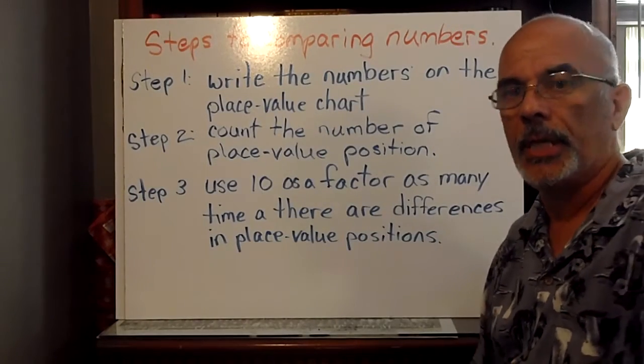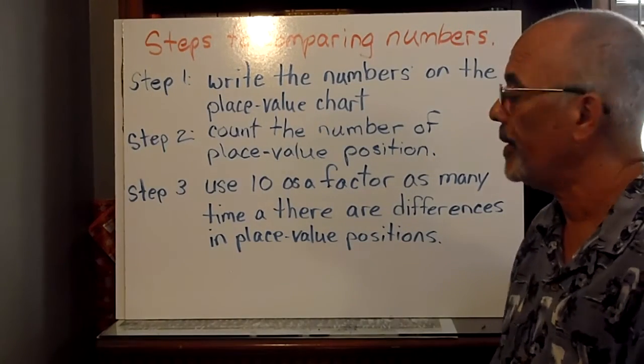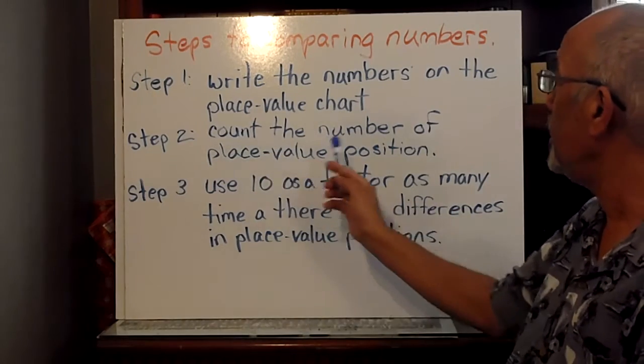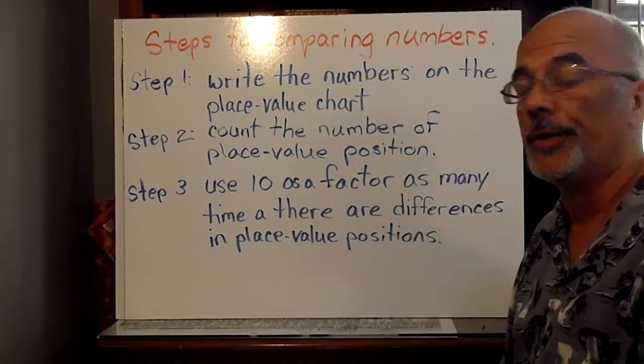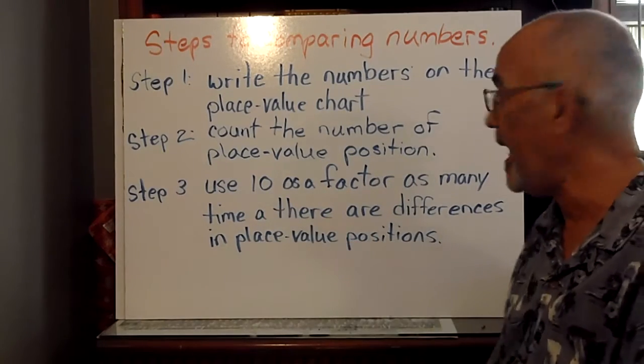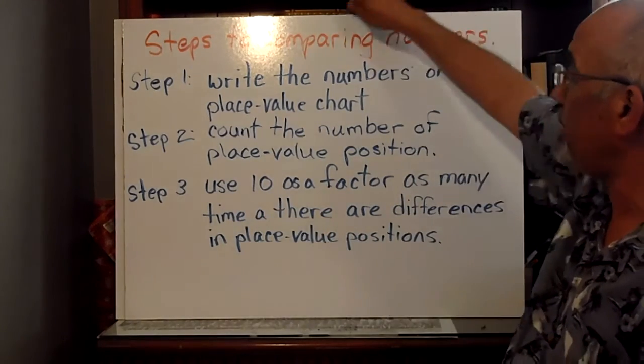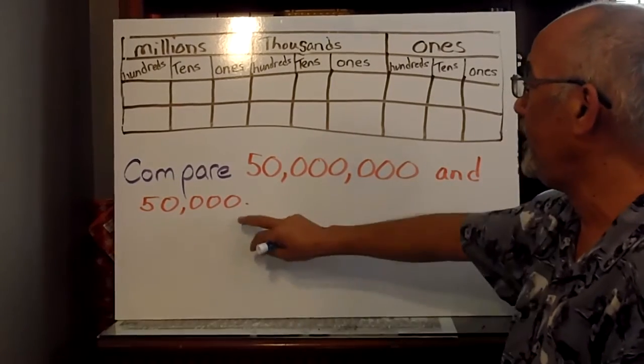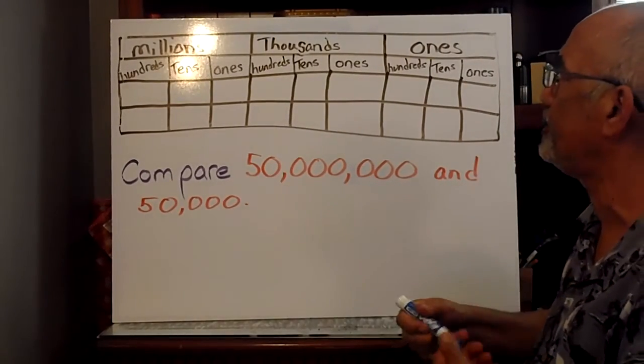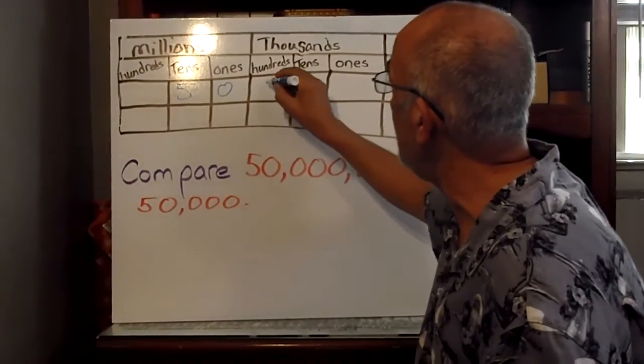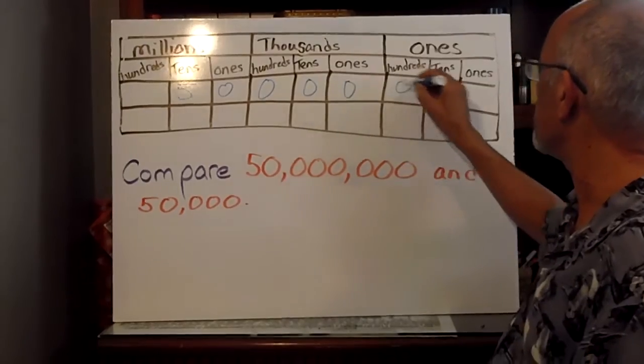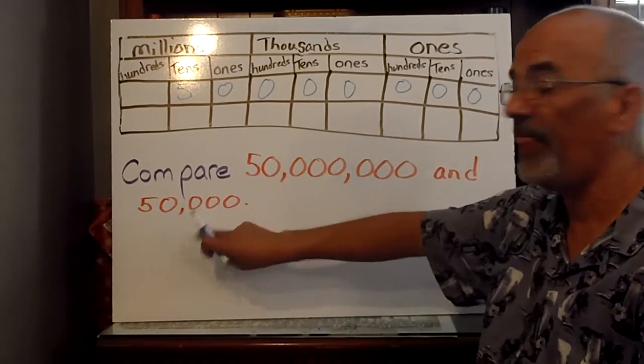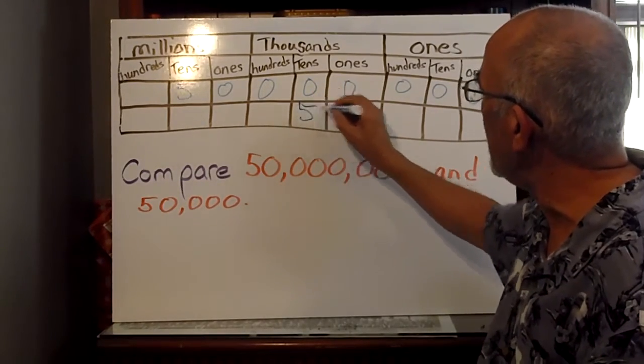You can also compare numbers using the place value chart. There's three steps to this, very quickly. First, we write the number in the place value chart. Second, we count the number of place values that it's over, and we use multiples of ten to see how many times one is bigger or smaller than the other. Okay. So, for example, here we have two numbers. I got fifty million. Fifty is five in the tens column, and the rest is zeros. Fifty million. And we want to compare that to fifty thousand. So, we'll go to the thousands, and we got fifty of them.